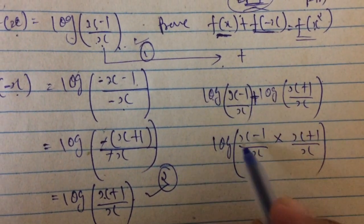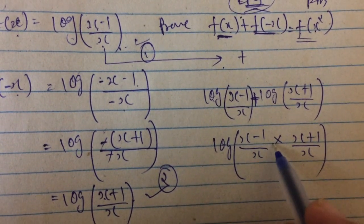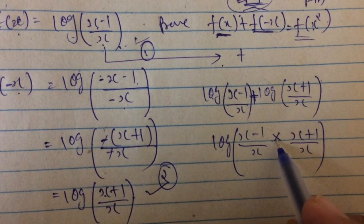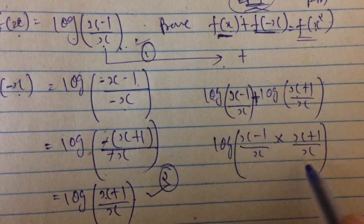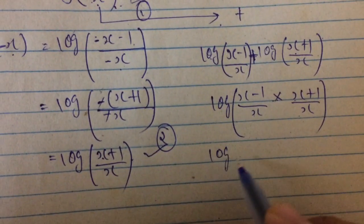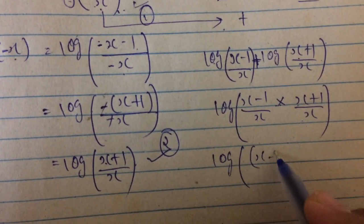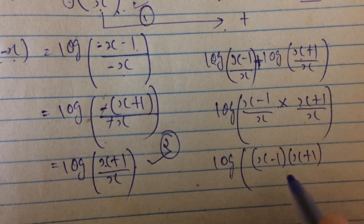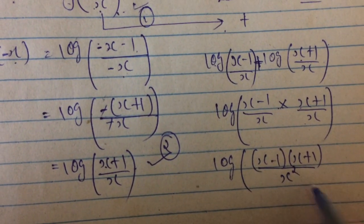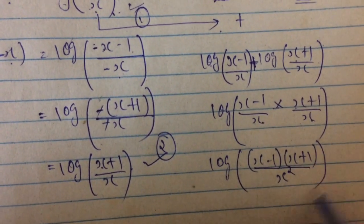So the equation becomes log((x-1)/x) times ((x+1)/x). When we simplify, the x in numerator and x in denominator gives us x², so it becomes ((x-1)(x+1))/x².